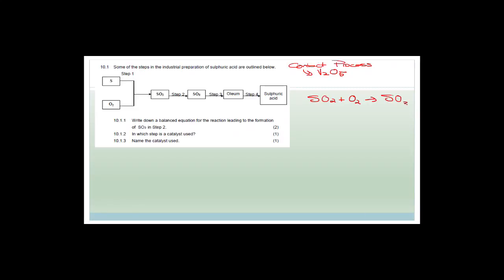To balance the equation, putting a 2 in front of SO₂ gives six oxygens, and putting a 2 in front of SO₃ gives two sulfurs and six oxygens on each side — balanced. The catalyst is used in step two, and its name is vanadium pentoxide. Note that they asked you to name it — writing V₂O₅ would get you zero marks. You need to write out the full name 'vanadium pentoxide' to get these marks.